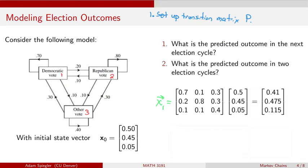Taking the product of the transition matrix and the initial state vector, we get the output vector X1: 0.41, 0.475, 0.115. Democrats are predicted to win 41% of the votes, Republicans 47.5%, and other candidates 11.5%. So while Democrats won the current election, the prediction is that Republicans would win the next election.